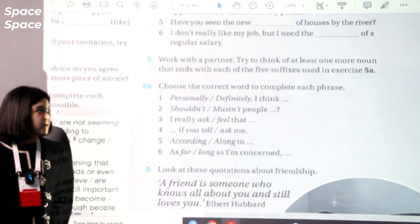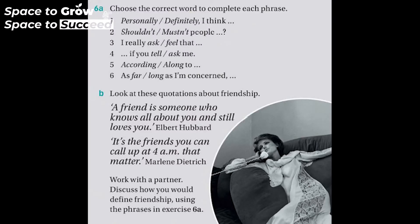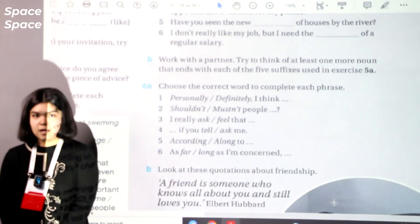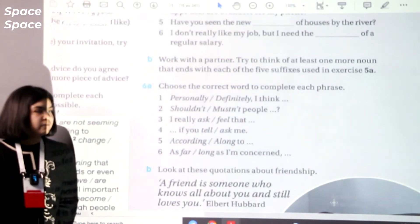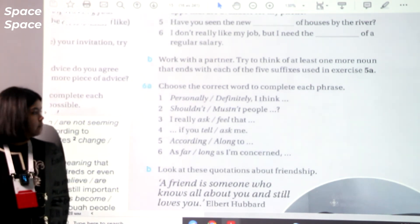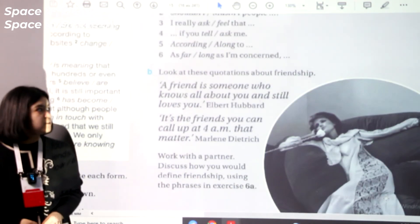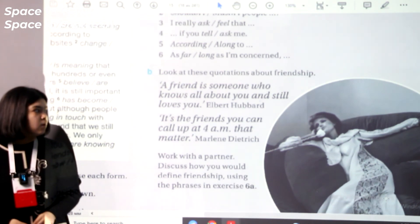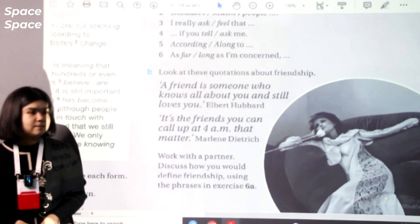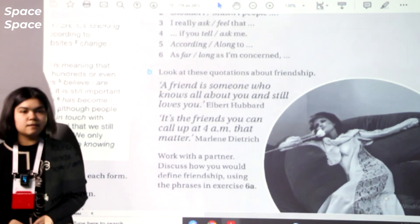In exercise 6a, choose the correct word to complete each phrase. Pause the video and do this exercise. The answers are: personally, I think; shouldn't; people really feel that; if you ask me; according to; and as far as I'm concerned. In exercise 6b, look at these quotations about friendship: 'A friend is someone who knows all about you and still loves you' — Elbert Hubbard; and 'It's the friends you can call up at 4am that matter' — Marlene Dietrich. Work with a partner and discuss how you would define friendship using the phrases from exercise 6a.